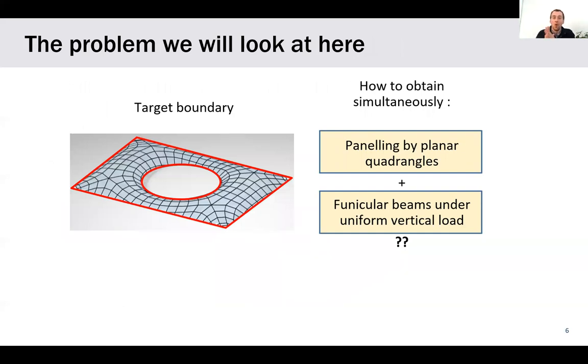More particularly, they will solve the following problem. Given a target boundary, how can we obtain simultaneously a mesh for which edges are funicular under a uniform vertical load, we will consider only uniform vertical loads, that's an assumption, and such that the panels are planar quadrangles. Very interesting properties for grid shells, for example, covered with double glazing panels or CLT panels. So the question, what shape and what topology work for this problem,